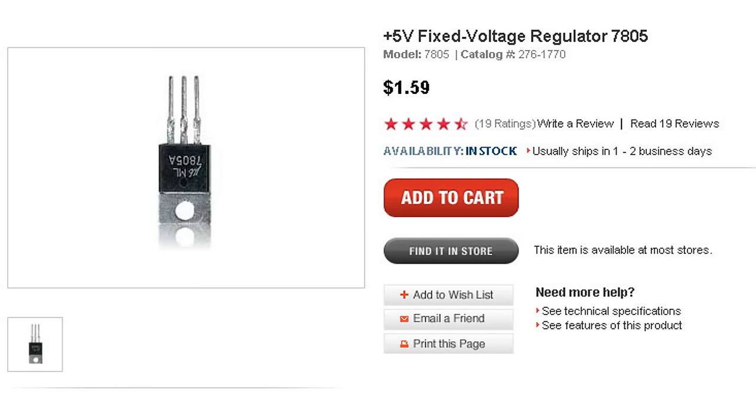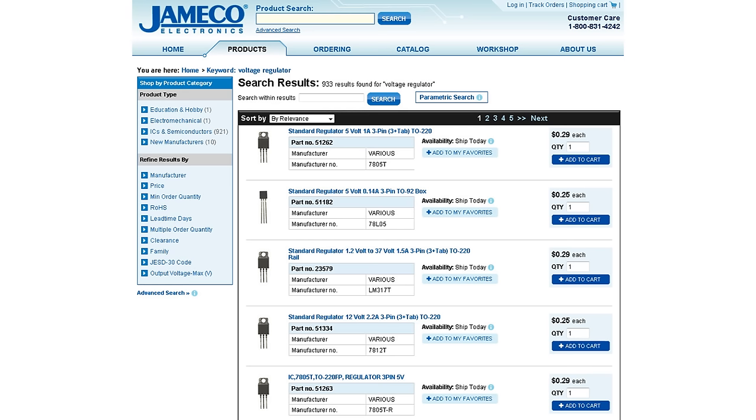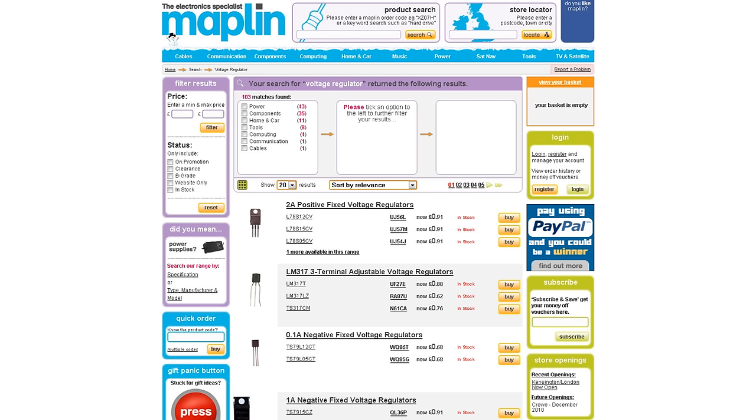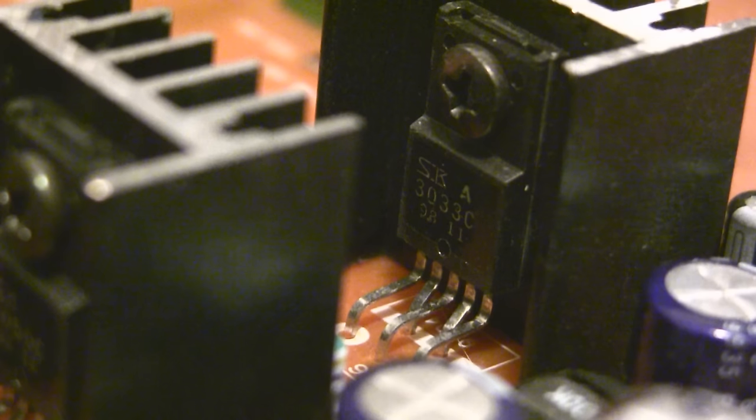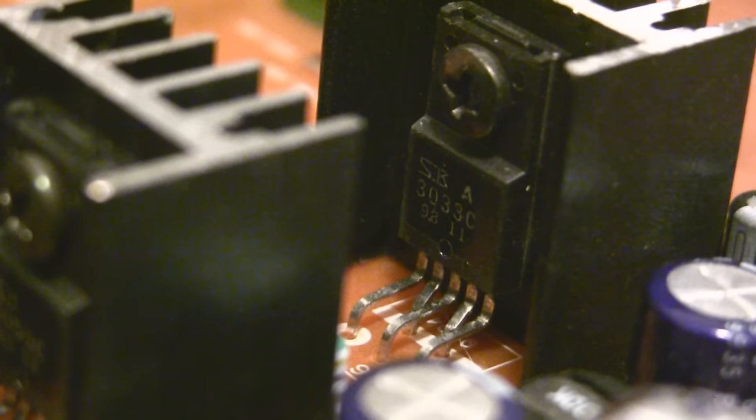You can buy these anywhere that sells electronics, Radio Shack, Jameco, Maplin, and a million other places because they're such a basic component. Just search for voltage regulator. You can also salvage them from old electronics.